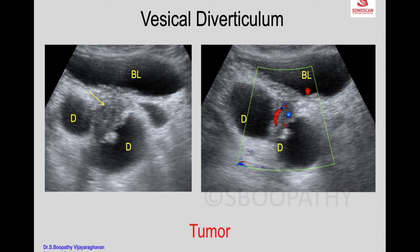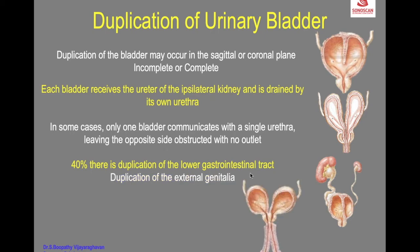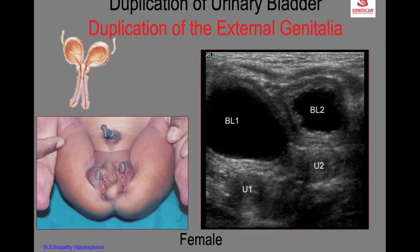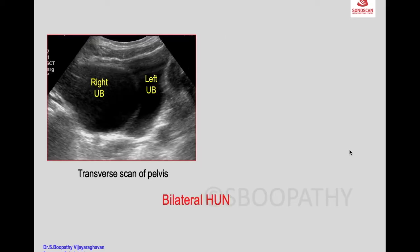This is a malignant tumour of the bladder. In about 40% there is also duplication of the lower gastrointestinal tract, or there can be duplication of the bladder and external genitalia. Similarly, in the female, there are two bladders. Through the bladder, both the lower ureters are dilated, and on transverse scan you see that there is duplication of the bladder — two bladders with asymmetric size.